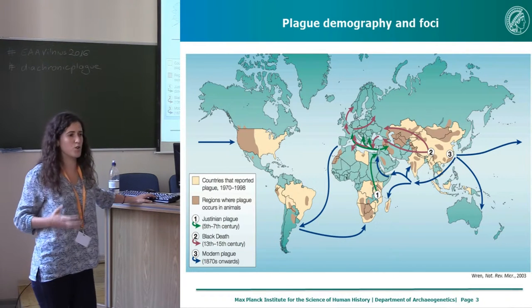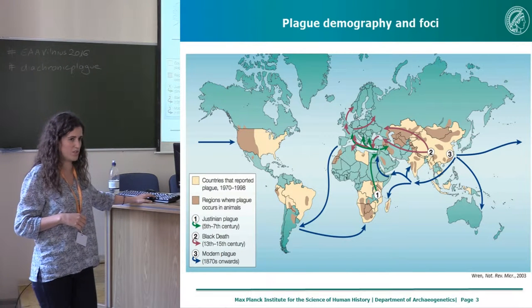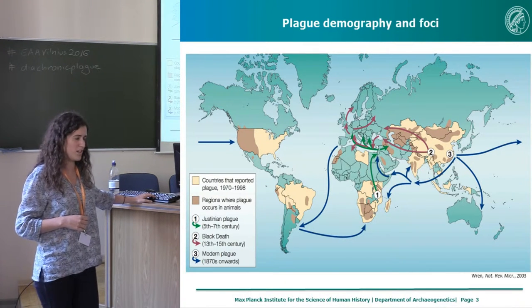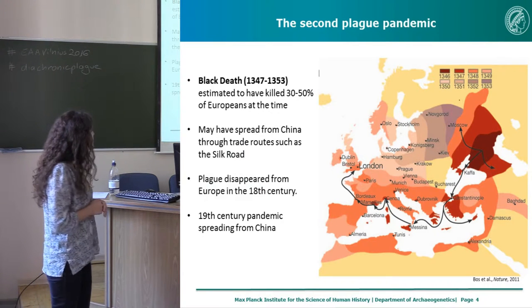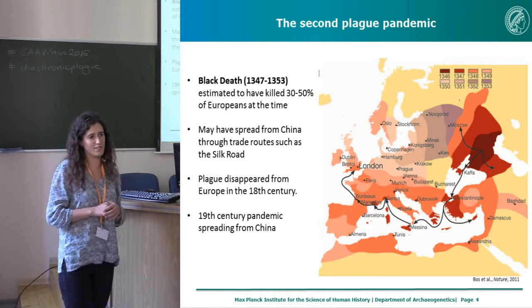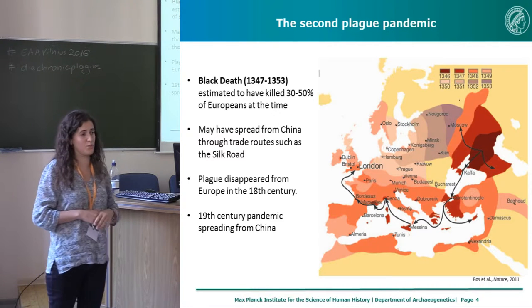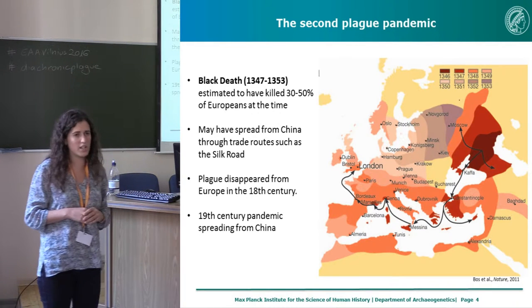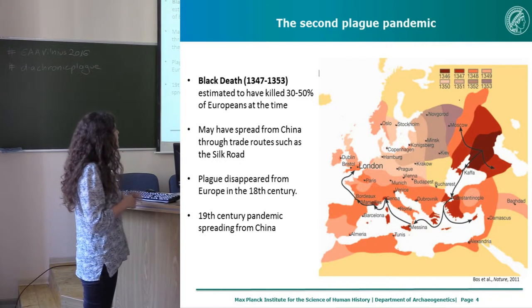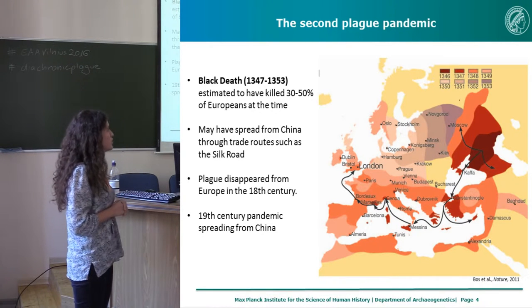Places like Europe that were afflicted by the first two pandemics don't show any foci today, and that's why we're looking into the archaeological record to better understand what was going on during that time. The second plague pandemic began with the Black Death in Europe between 1347 and 1353. According to historical records, it is supposed to have killed up to 50 percent of the European population. It is thought to have entered Europe perhaps from China through trade routes, entering through Kaffa and then afflicting the main Mediterranean parts of Europe before making its way up to central and northern Europe.